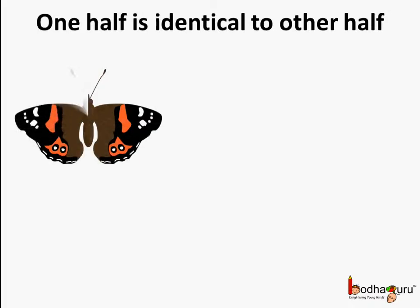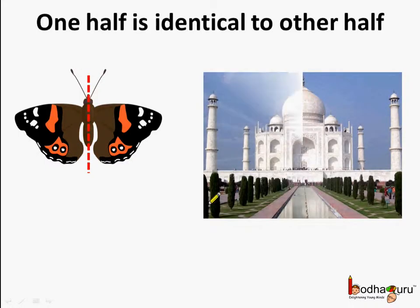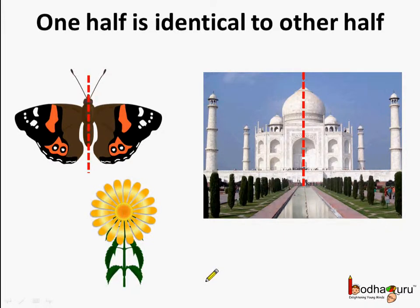Like here, the butterfly — if we see, the right half is identical to the left half. Same way, in the case of Taj Mahal, these two are identical halves, meaning they are similar in size and shape too. And this is a beautiful flower — here again, the right half is identical to the left half. Not only the shape is the same, but even the size of both halves are similar.